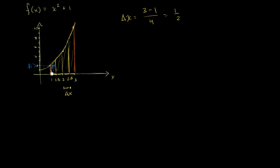That is the height of our first rectangle. For the left boundary of the second rectangle, we're looking at the function evaluated at 1.5, so f of 1.5 is the height — giving us our second rectangle. For the third rectangle, the function evaluated at 2, so f of 2. And for the fourth rectangle, the function evaluated at 2.5, so f of 2.5. In each case, I'm using the left boundary of the rectangle and evaluating the function there to get the height.